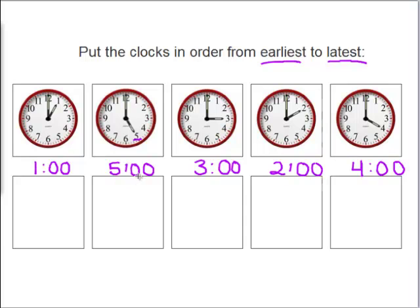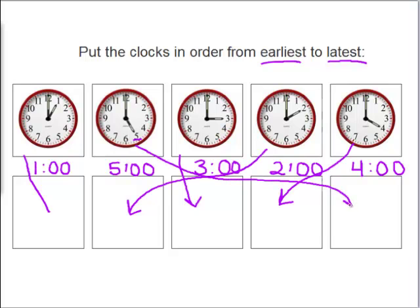So which one would be the earliest? Yes, the 1 o'clock. So we can draw a line here. So 1 o'clock is first. What comes after 1? Yes, 2 is next. 2 and then 3. Very good. 4. And our latest time is 5 o'clock.